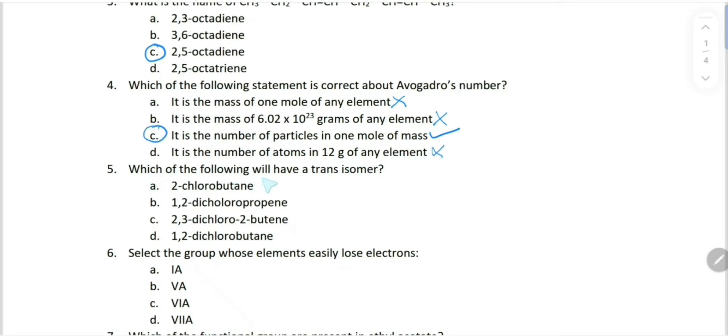Which of the following will have a trans isomer? Two-chlorobutane - no. In alkanes, it's not possible. In cycloalkenes it can happen, but not in alkanes. 1,2-dichloropropene - no, this also doesn't have that possibility. 2,3-dichloro-2-butene - let's see this choice. 2,3-dichloro-2-butene: we have four carbons, 1, 2, 3, and 4. The two shows that double bond is on second carbon.